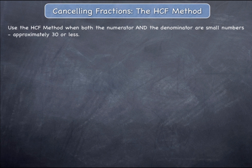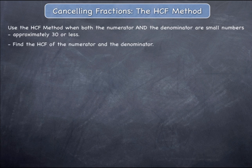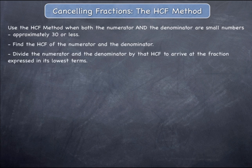Use the highest common factor method when both the numerator and the denominator are small numbers, approximately 30 or less. To use this method, find the highest common factor of the numerator and the denominator, and then divide the numerator and the denominator by that highest common factor to arrive at the fraction expressed in its lowest terms.